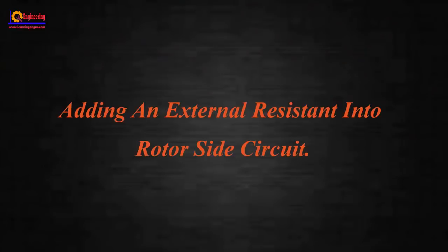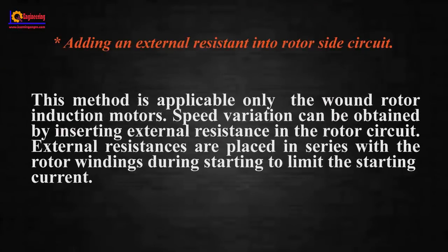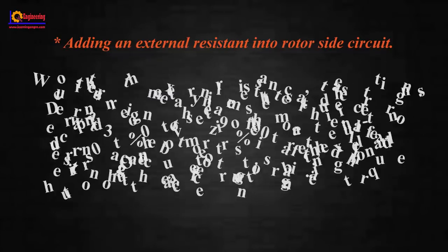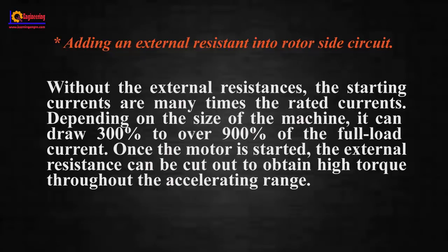Adding an external resistance into rotor side circuit: this method is applicable only for wound rotor induction motors. Speed variation can be obtained by inserting external resistance in the rotor circuit. External resistances are placed in series with the rotor winding during starting to limit the starting current. Without the external resistance, the starting currents are many times the rated current. Depending on the size of the machine, it can be 300% to over 900% of the full load current.